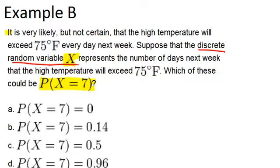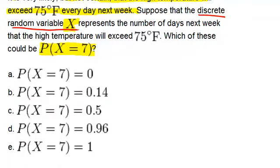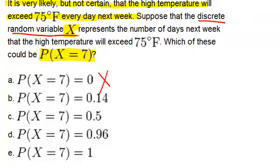And it said at the beginning that it is very likely, but not certain, that the high temperature will exceed 75 degrees every day next week. So the probability that it will be 75 degrees or more 7 days next week, all 7 days, is pretty high. So if we look at our options down here, I wouldn't say that the probability is zero because that would be if we knew for sure that it wouldn't be 75 degrees. Like perhaps it's the middle of a snowstorm or something like that. And the next one, 0.14, is also pretty low chance. And it had said at the beginning that it is very likely, but not certain. So I would say if we look at all of these numbers going up to 1...